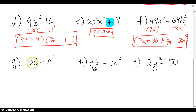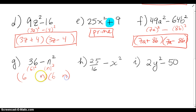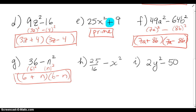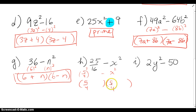For 36 minus n squared, 36 is a perfect square — 6 squared — and n is squared. So my binomials will have 6 and n, 6 and n, with plus and minus. If you're starting with a perfect square number, the number goes first. For 25/16 minus x squared, think of that as 5 fourths squared, and then x squared. Put one of each — 5 fourths and x — with plus and minus. That's the difference of squares factored into two binomials.